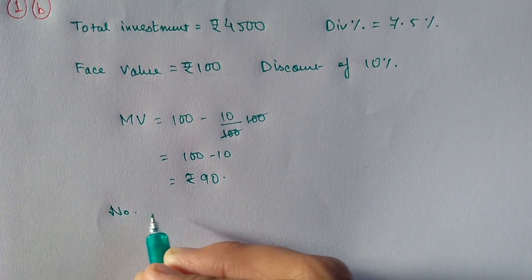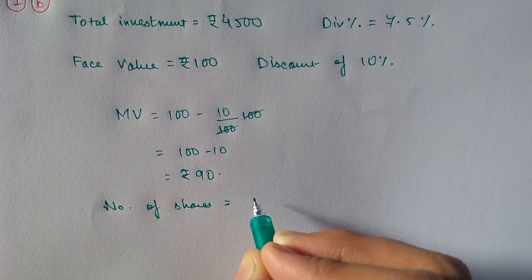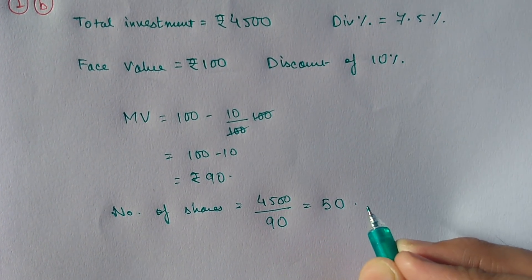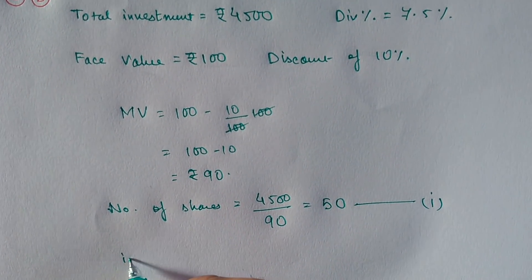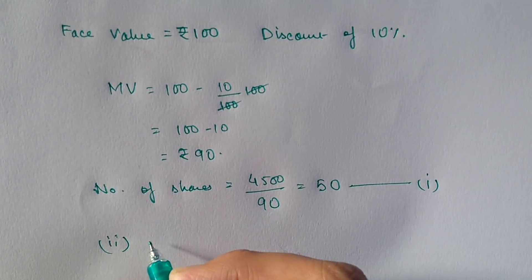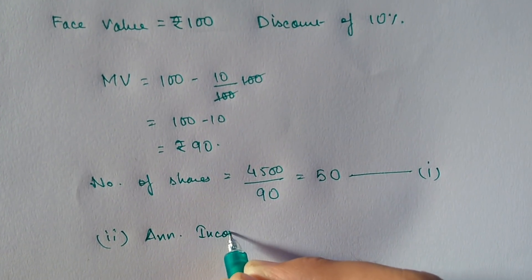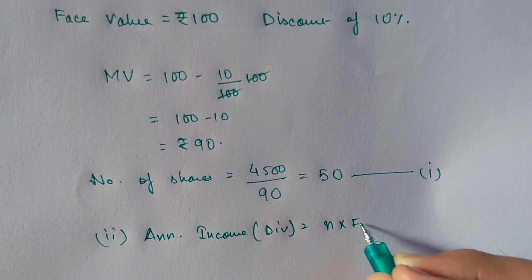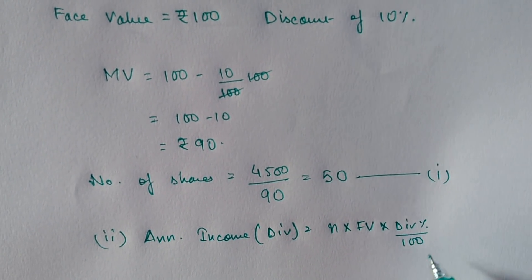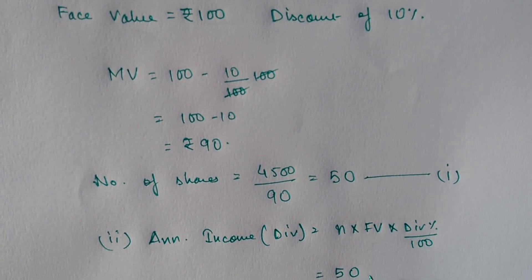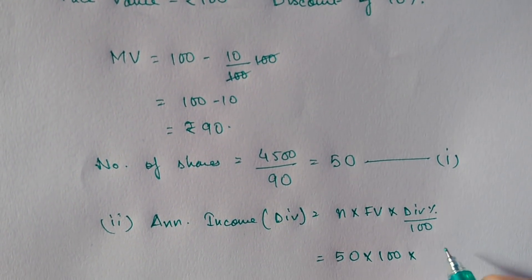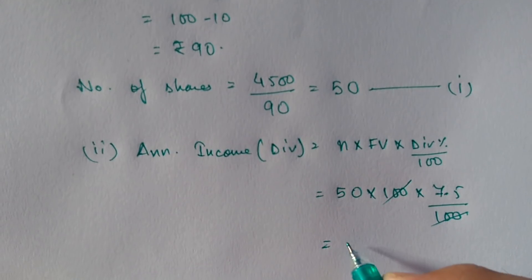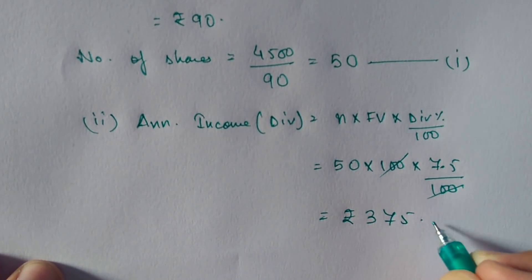The number of shares equals total investment divided by market value: 4500 divided by 90, which equals 50 shares. For the second answer, annual income (dividend) equals number of shares into face value into dividend percent divided by 100: 50 into 100 into 7.5 divided by 100, which gives Rs. 375.